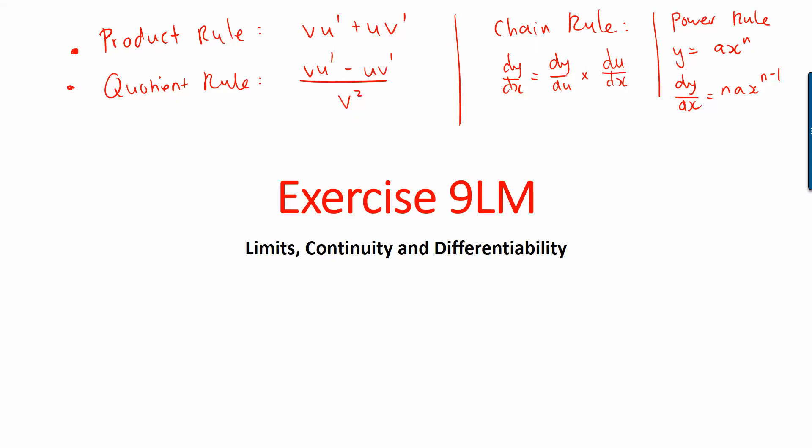Chain rule is your bread and butter, because in your exam it's likely to be one of those. It's either going to be: find the derivative — differentiate or find the derivative of exponential e to the x, sine of x, cos of x, log e of x, and tan of x. You need to know how to find the derivative of each one of those, remember the rules for all five, and then know how to use chain rule with all of them. That's what 9G, 9H, and 9I was about. When you find the derivative, you're finding the gradient of one point — the tangent line. Gradient means steepness.